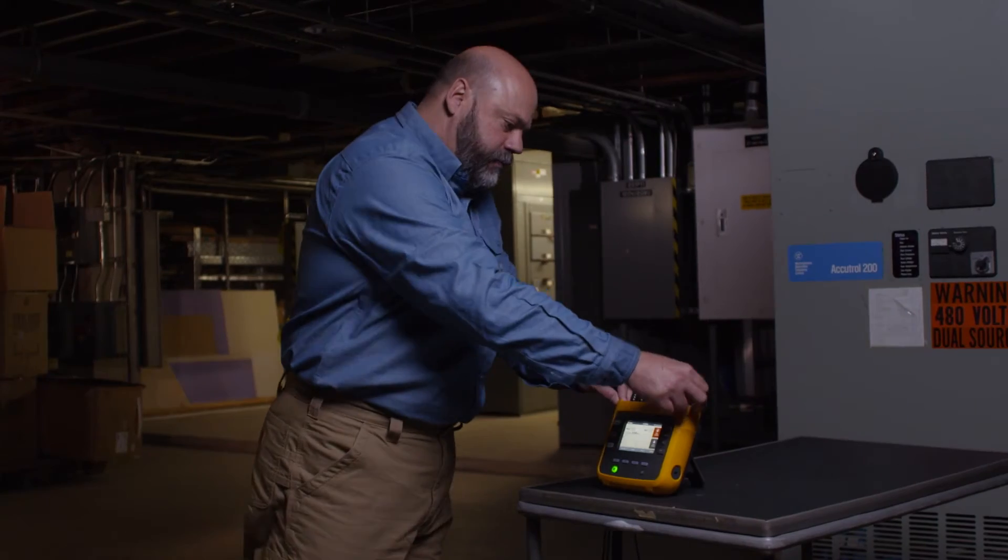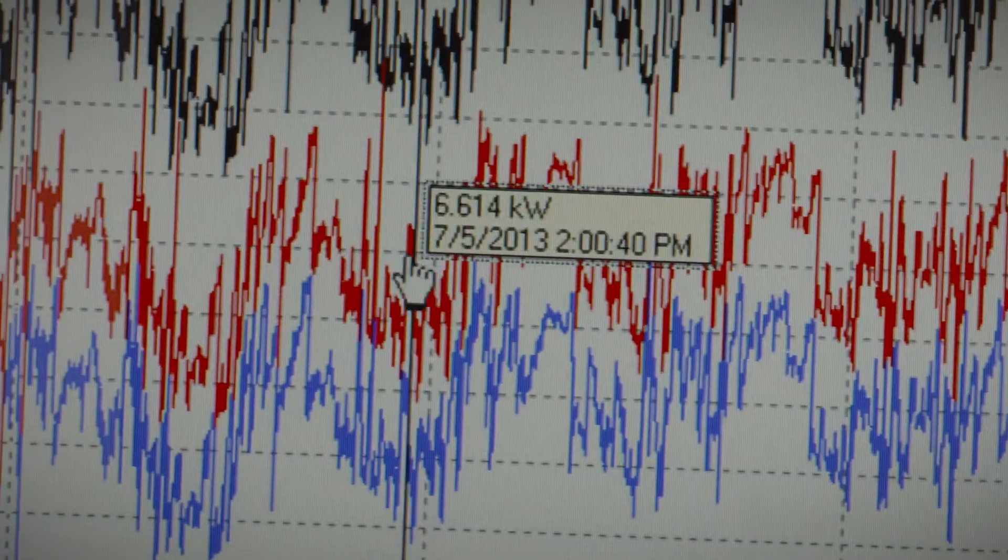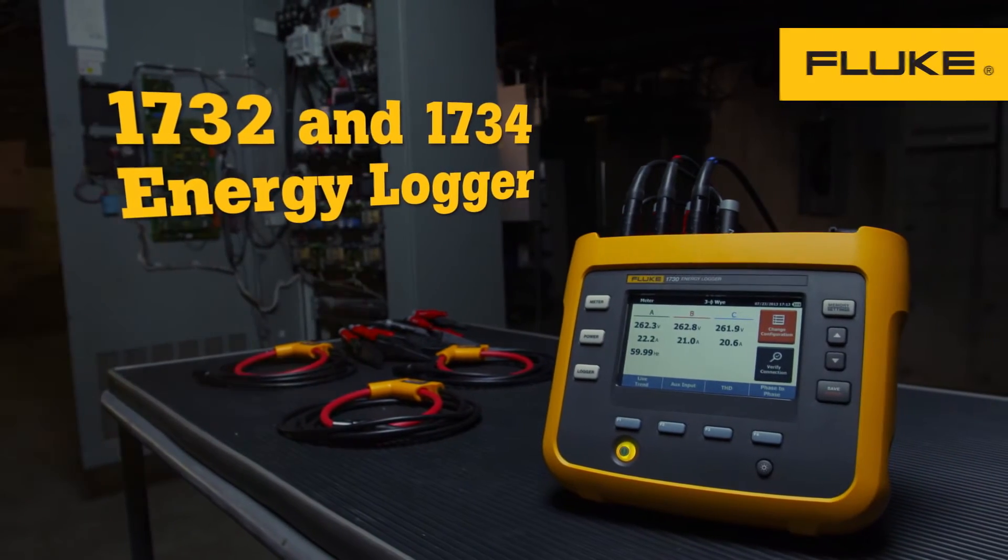Paying for power you're not using is a problem. Start tracking your energy and stop wasting your money. Put the 1732 or 1734 to work for you.